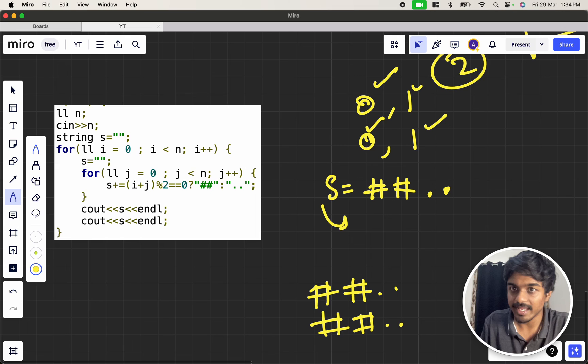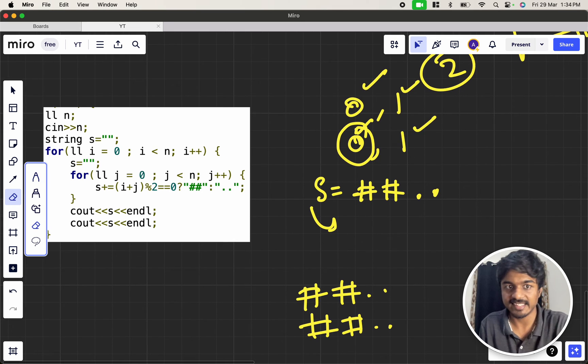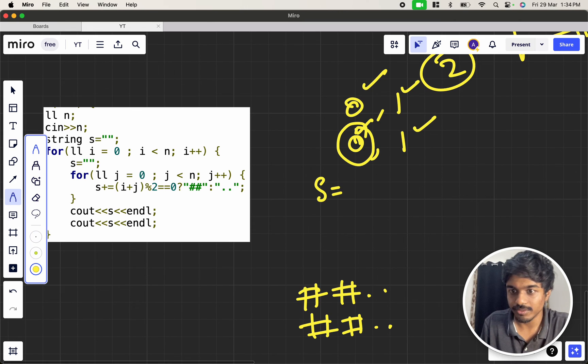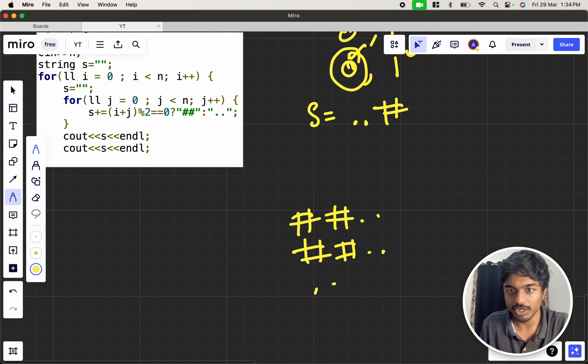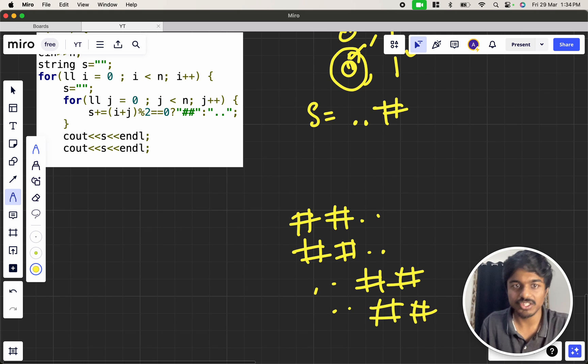Now let's go for the next element, i equal to 1 and j equal to 0. I am already clearing s equal to empty. If i equal to 1 and j equal to 0, it is odd so I print dot dot. i equal to 1 and j equal to 1 means both are 1, 1 + 1 is even, even becomes hash hash. Similarly I am printing this two times: dot dot hash hash and dot dot hash hash. Instead of if condition I am using a ternary operator. This is one cool submission I saw and I thought of sharing